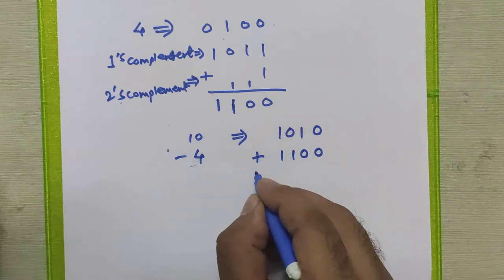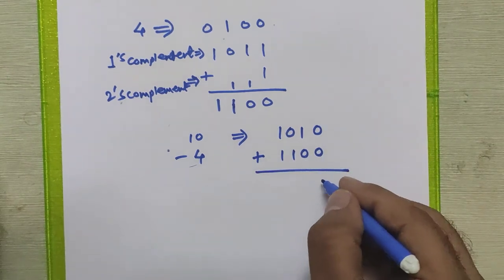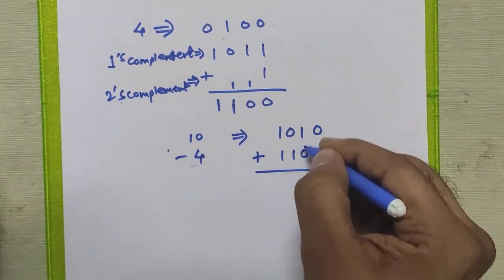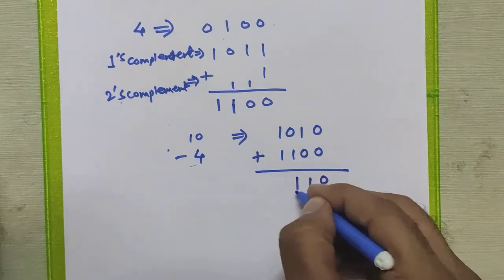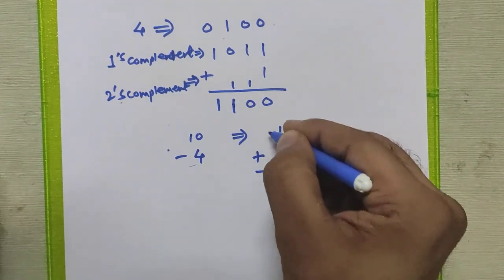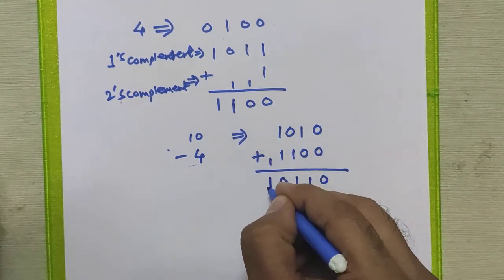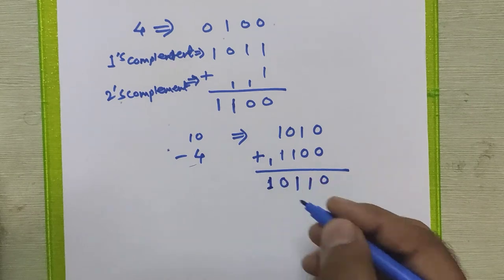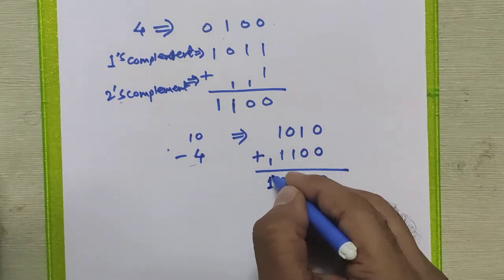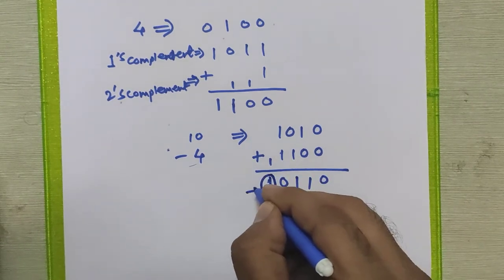We perform this addition. Zero plus zero is zero, one plus zero is one, zero plus one is one, and one plus one is zero with carry one. This carry is generated in the result.